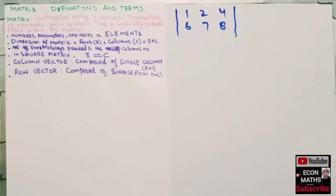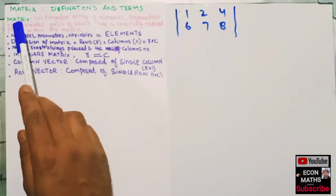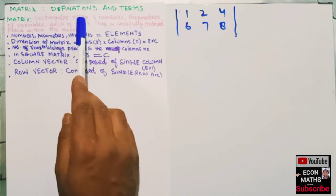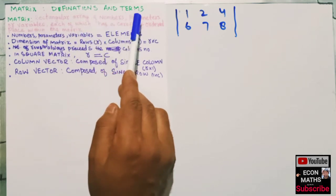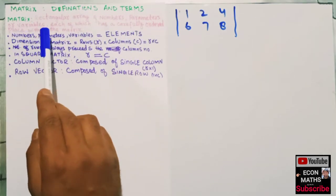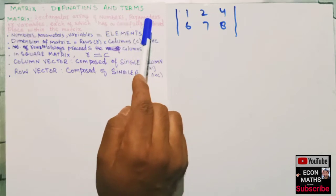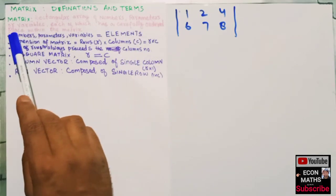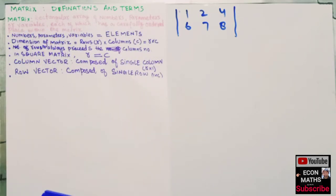Hi, this is Hilal. In this video on the mathematical economics series, I will explain definitions in terms of matrix algebra. In an earlier video I gave a brief introduction about matrix algebra or linear algebra. A matrix is a rectangular array of numbers, parameters, or variables, each of which has a carefully ordered place within the matrix.